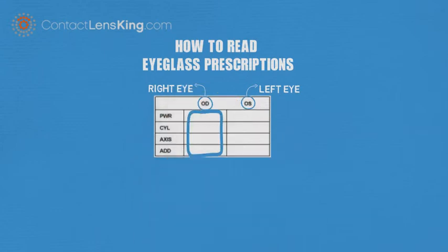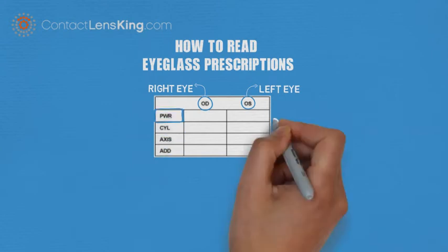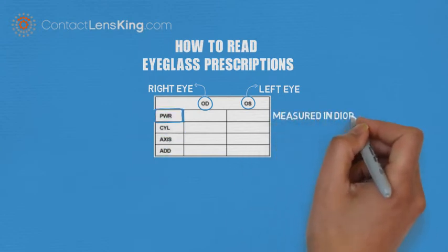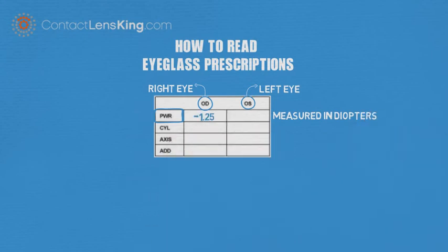Within each of these columns or rows you may see power or sphere, cylinder, axis, and add power. The sphere number indicates the vision correction measured in diopters. A minus power corrects for short-sightedness, also known as myopia, and a plus power corrects for farsightedness, also known as hyperopia.